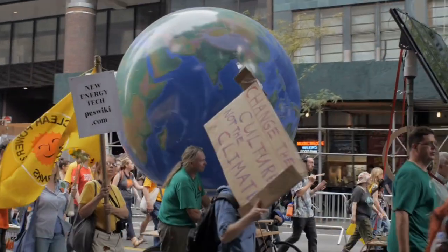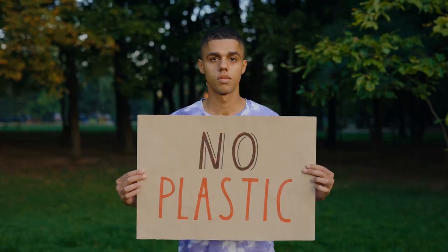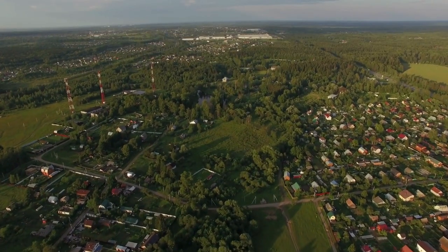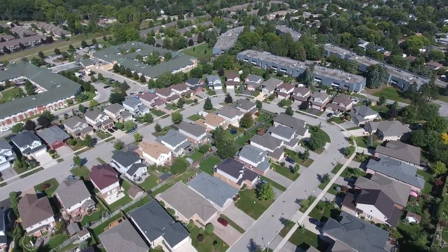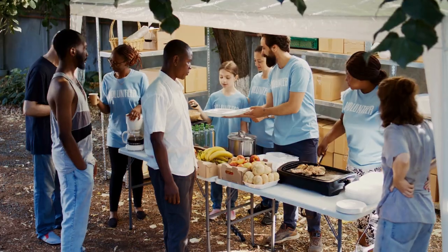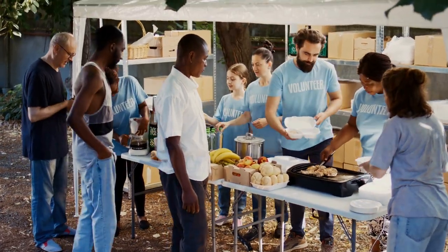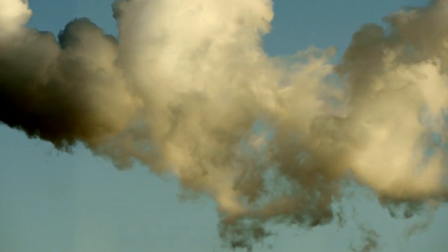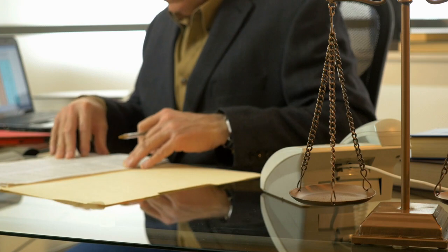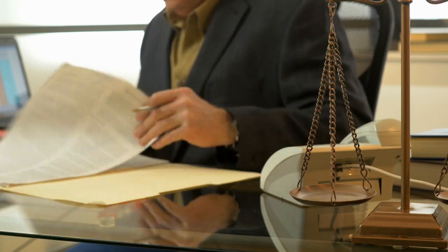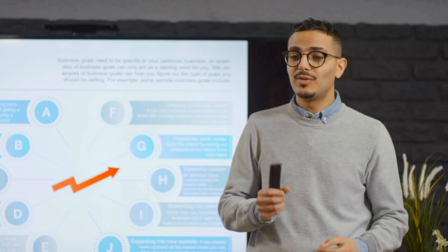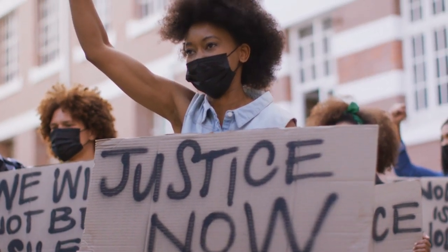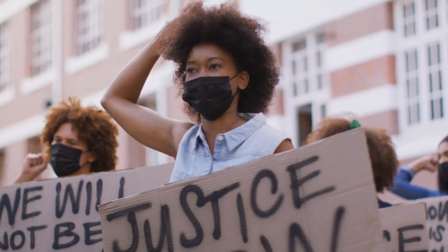Environmental justice refers to the fair and equitable distribution of environmental benefits and burdens across different communities, regardless of race, socioeconomic status, or other demographic factors. In the realm of scientific environmental justice, several issues highlight disparities and the need for a more equitable approach to environmental concerns. Here are some scientific environmental TED Talk and justice problems.